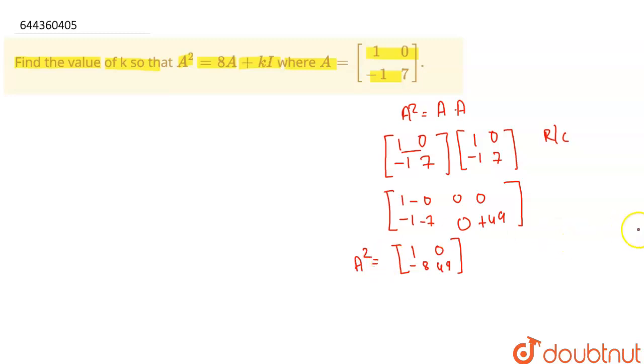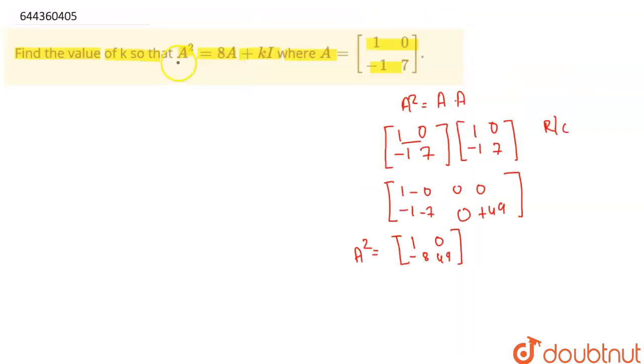So now students, if I put the value in the given equation, what I will get is, our A² is [1, 0, -8, 49] and the remaining equation can be written as 8 times A.